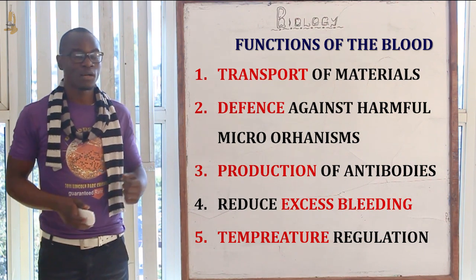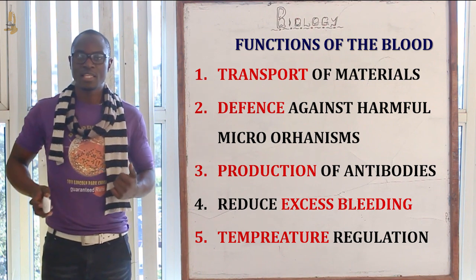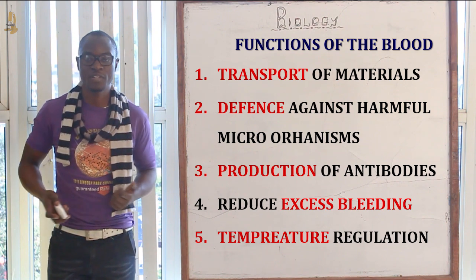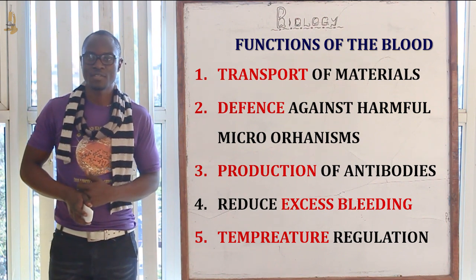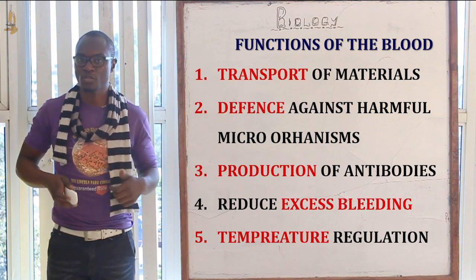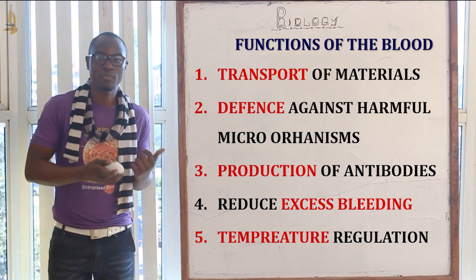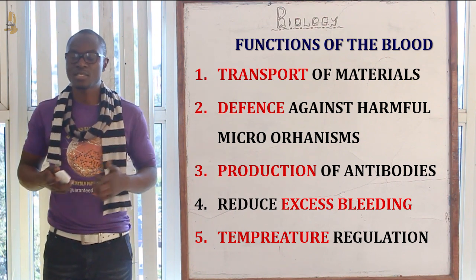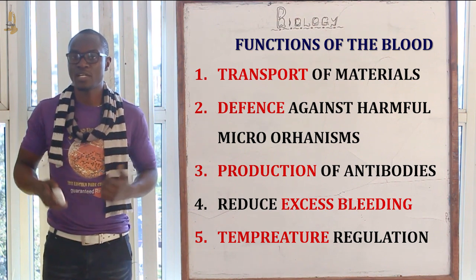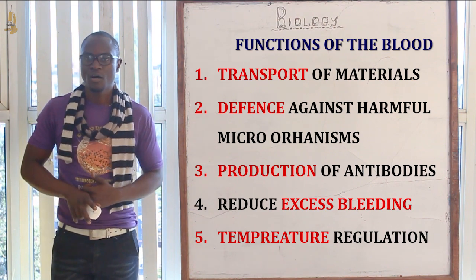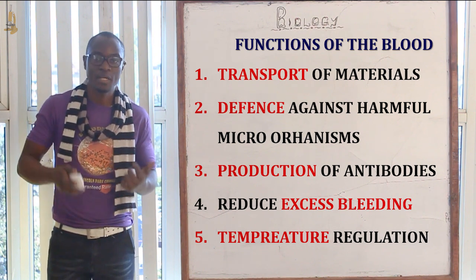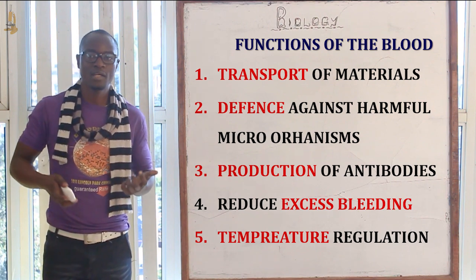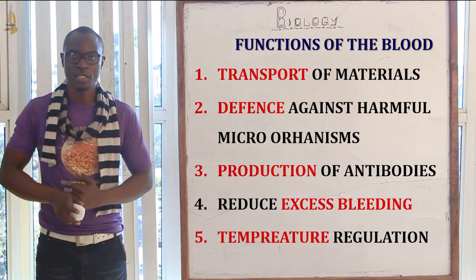Now let's look at the functions of the blood. The first function is that blood serves as a transporting medium for different materials in the body. Blood also serves as a defense mechanism, containing white blood cells to fight different harmful microorganisms. Blood also produces different antibodies, and it contains platelets which help reduce excess bleeding. Finally, blood contains mechanisms for temperature regulation.